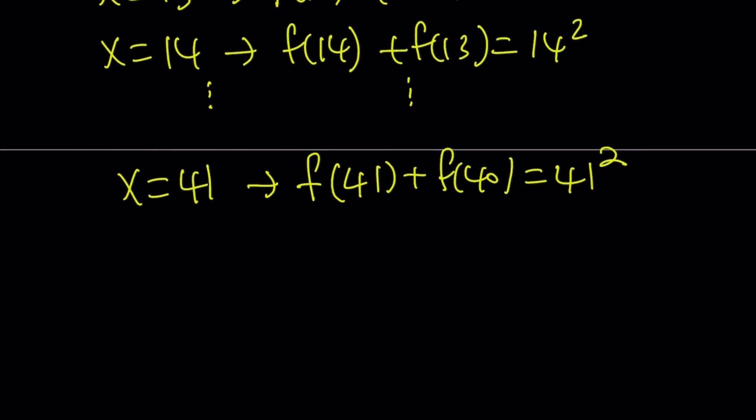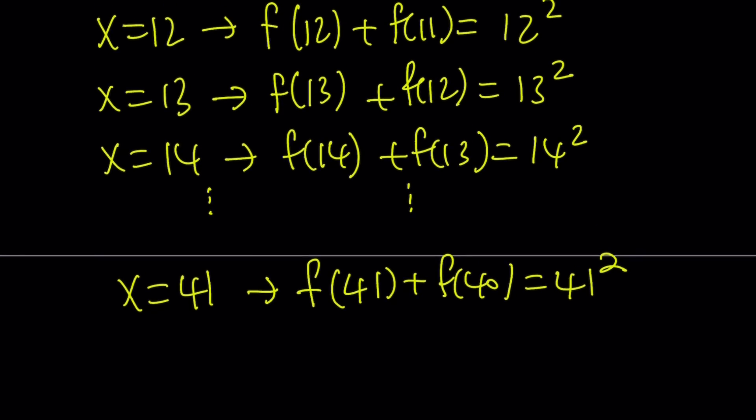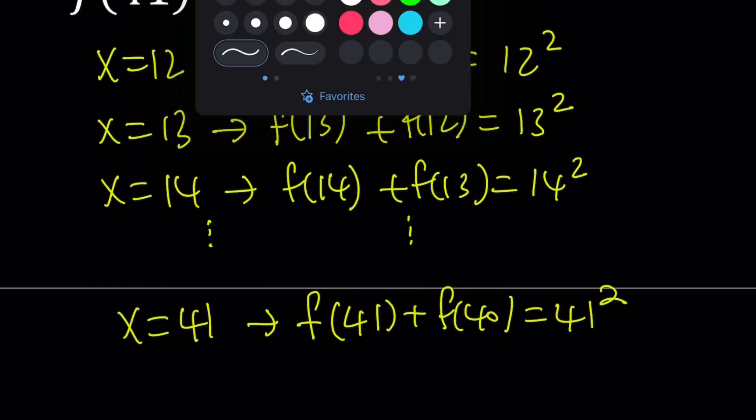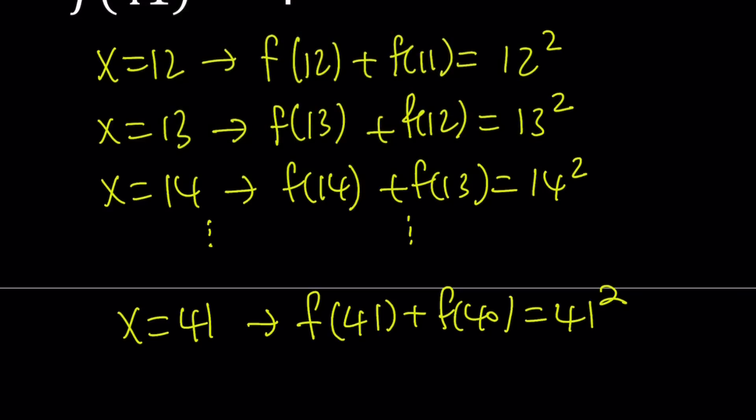And of course, all the values in between. Because if you use 42, then you're going to have to evaluate 42, but that's not the goal. So f of 41 plus f of 40, and this should equal 41 squared. Great. Now, our goal is to find f of 41, and we do know f of 11, which both of them are part of these equations.